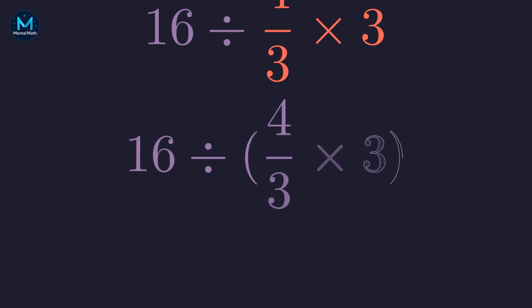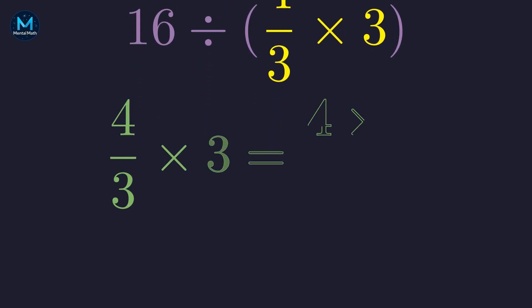If we add parentheses to make this explicit, it looks like this. Now we need to simplify what's inside the parentheses first. Four-thirds times three. When multiplying a fraction by a whole number, we multiply the numerator. Four times three in the numerator. 12 divided by three equals four.